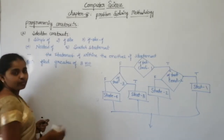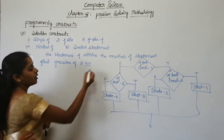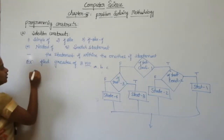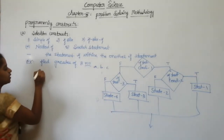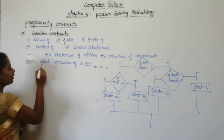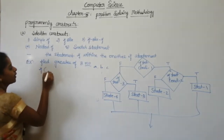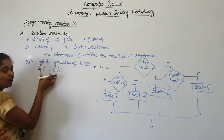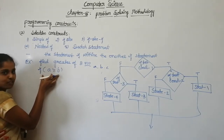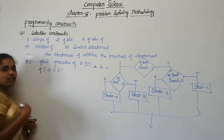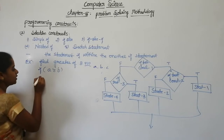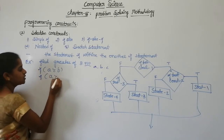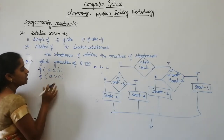Here the three numbers are a, b, and c. In the first test condition, if a is greater than b — within this if statement, another if statement is present, that is if a is greater than c.